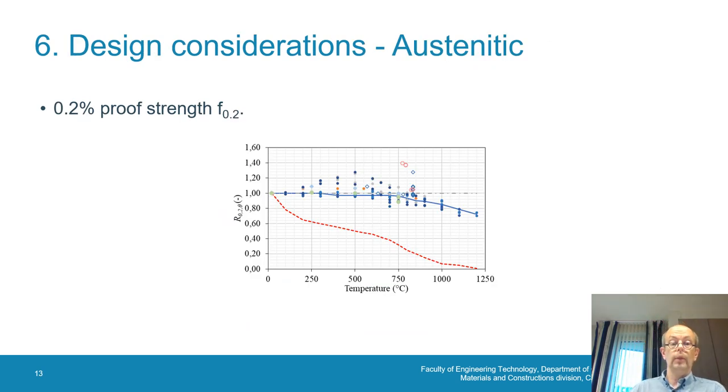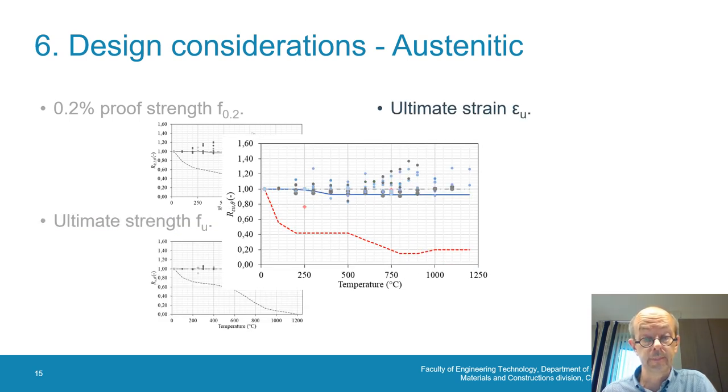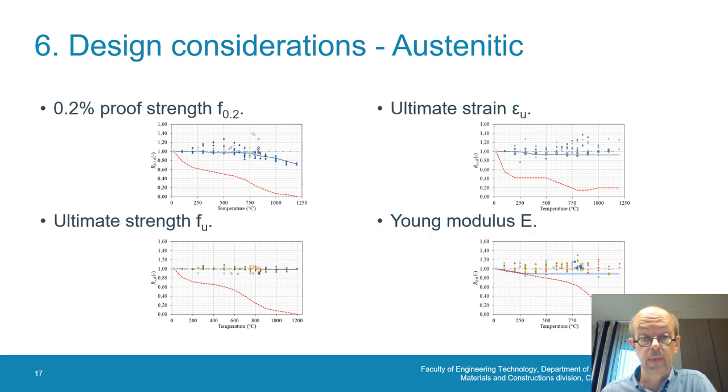By doing so, we arrive to austenitic grades. For example, the proof strength, and we see that this proof strength is quite constant till about 750 degrees Celsius. It's only slightly lesser than in ambient conditions, while the reduction factor was quite important. If we take a look to the ultimate strength, we observe almost no degradation of the material. For the ultimate strain, and the ultimate strain together with the ultimate strength and the proof strength will be needed at the moment that we want to use more advanced methods for the design of our stainless steel, like in the continuous strength method, we see that after about 250 degrees Celsius, there is a small reduction, and then it stays constant. And this same can be said about the Young modulus, or the modulus of elasticity.